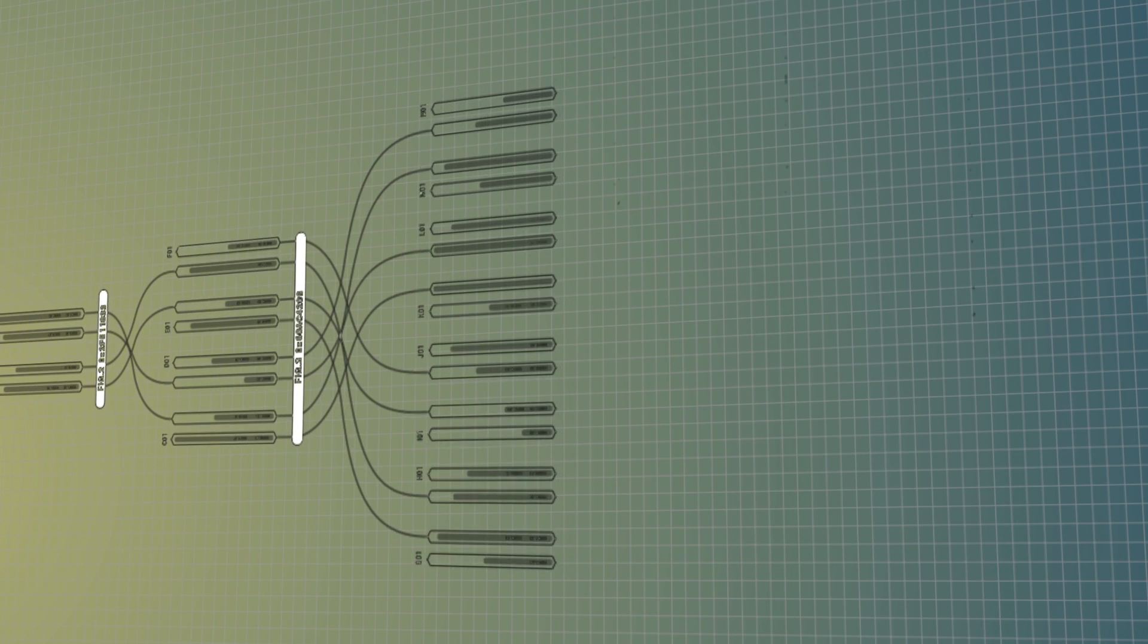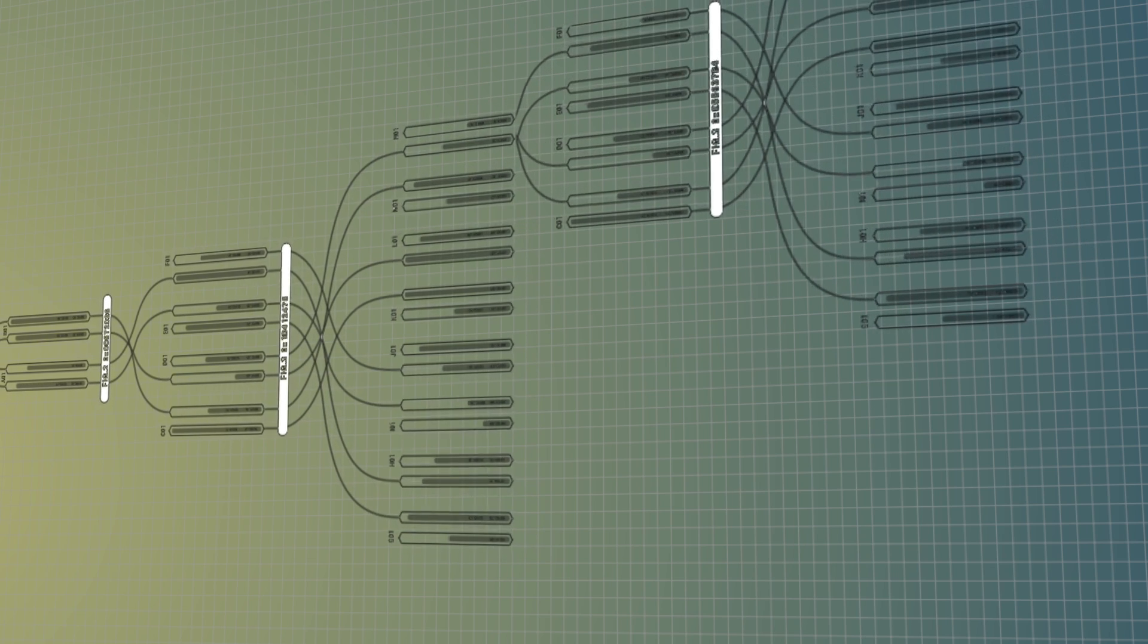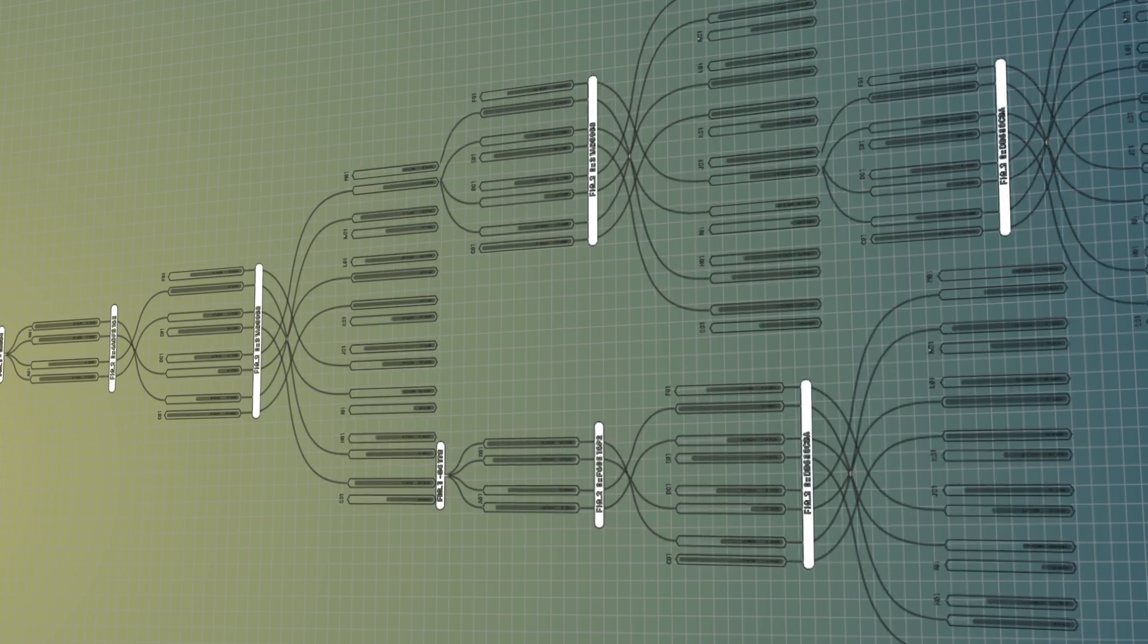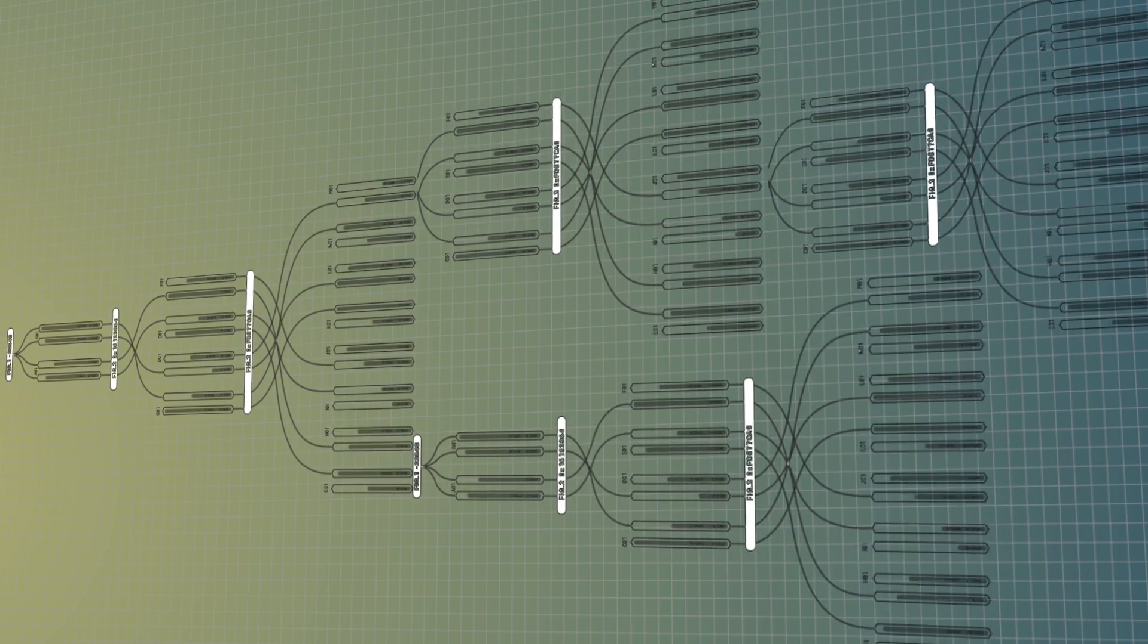Meanwhile, researchers at Chongqing University are using a special algorithm to pull decision-making trees from an artificial neural network's processing to trace the sequences the network used to come to a conclusion.